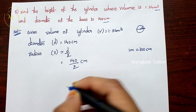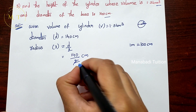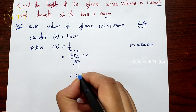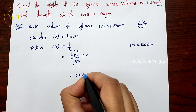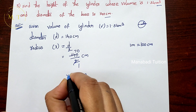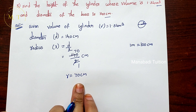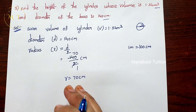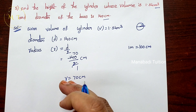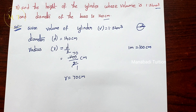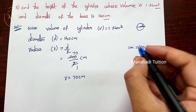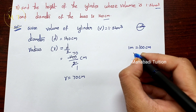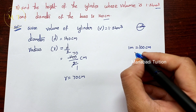Radius = 140 ÷ 2 = 70 centimeters. Now converting: 1 meter = 100 centimeters, so 1 centimeter = 1/100 meters. Therefore, 70 centimeters = 70/100 meters = 7/10 meters.